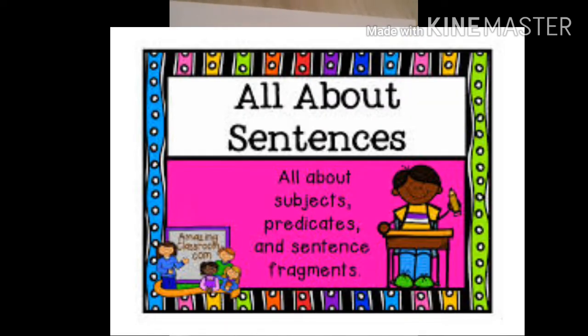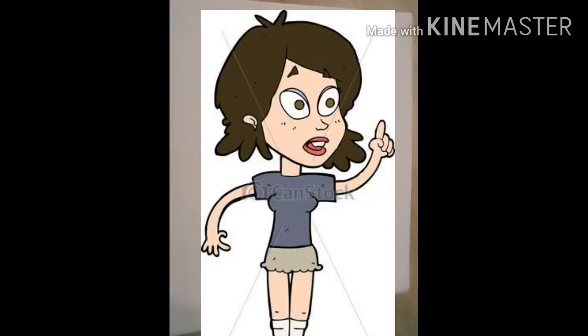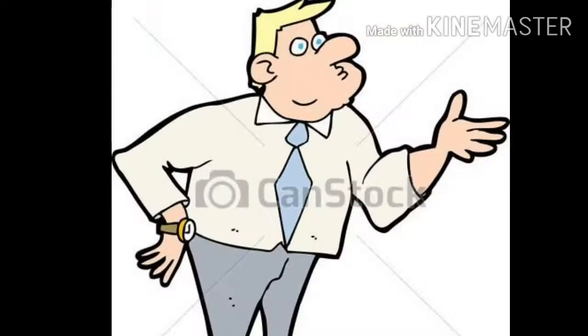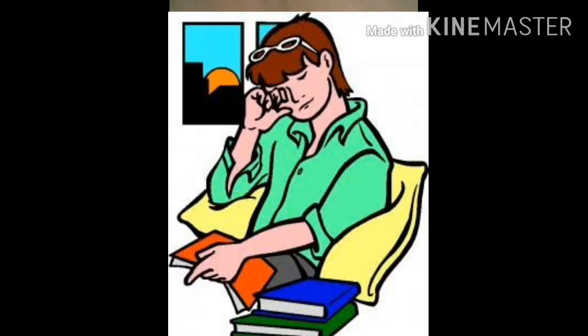A sentence may have two parts: subject and predicate. The subject is the performer of the action, and the predicate is the part of the sentence that gives you information about the subject's action.